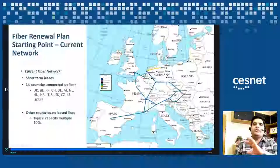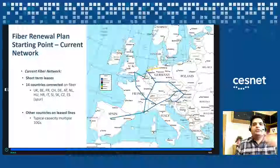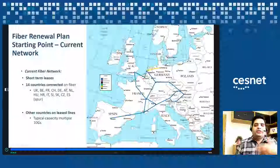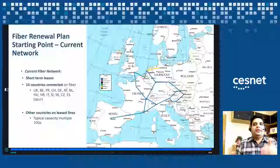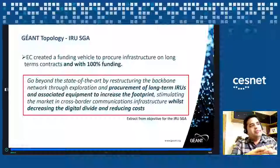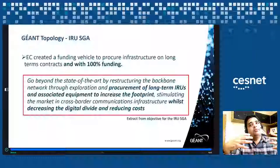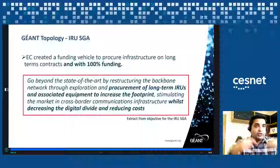This is the main core fiber. Where we don't have fiber, we use leased capacity or cross-border fiber — for example, in Portugal we have connectivity from Lisbon to Madrid via cross-border fiber provided by the Spanish and Portuguese NRENs, and a second backup link via a commercial provider. I mentioned the new funding stream: we got an GÉANT SGA from the EC, which created a vehicle to procure fiber infrastructure on long-term contracts, 100% funded. The goal is to procure long-term IRUs and the associated line system equipment, to decrease the digital divide in Europe, reduce cost, and provide high-capacity network across Europe.